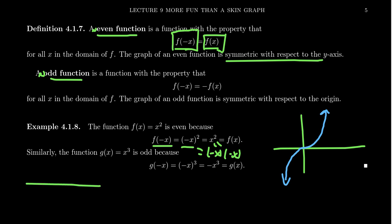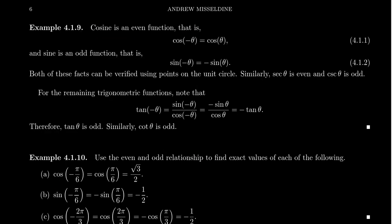For an even function like x squared, the graph is symmetric with respect to the y-axis. So those are odd functions and even functions — you've possibly seen this before in an algebra class. What does this have to do with trigonometry? Well, it turns out that the trigonometric functions are symmetric as well. Cosine is an example of an even function, and sine is an example of an odd function.